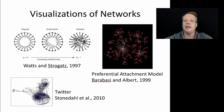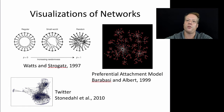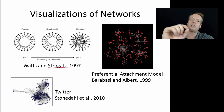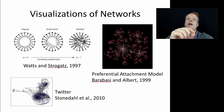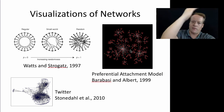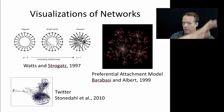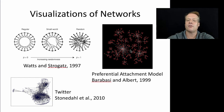This generates interesting properties we see in real-world networks. One result is the friends paradox: on average, your friends have more friends than you do. This seems confusing, but it's because this is a heavy-tailed distribution — a few individuals have a lot of friends. On average you're not one of those people, which means on average one of your friends is. When you average all of their friends together with your friends who have fewer, you get more friends on average. This is an interesting result of the preferential attachment property.